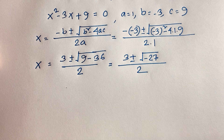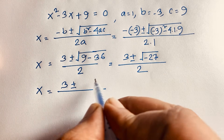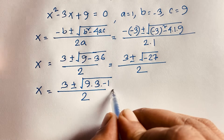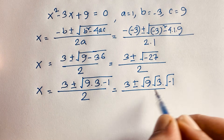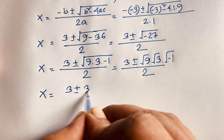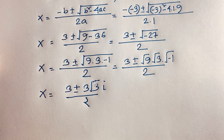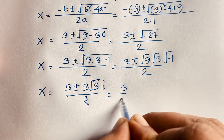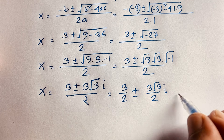Now, x equals 3 plus or minus square root of negative 27 over 2. We can write negative 27 as 9 times 3 times negative 1. So the square root becomes square root of 9 times square root of 3 times square root of negative 1. That simplifies to 3 times square root 3 times i. So x equals 3 plus or minus 3√3·i, all over 2. There is no real solution — this is a complex solution.